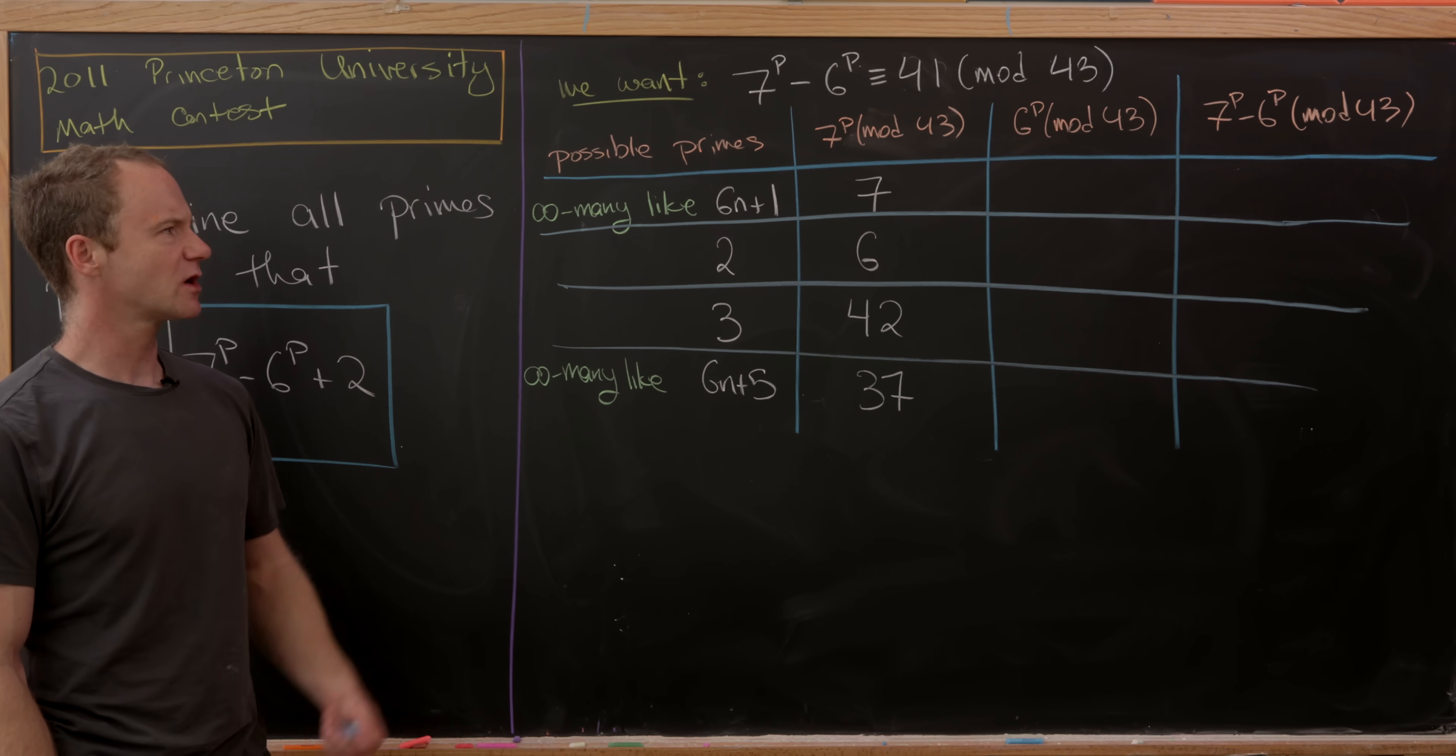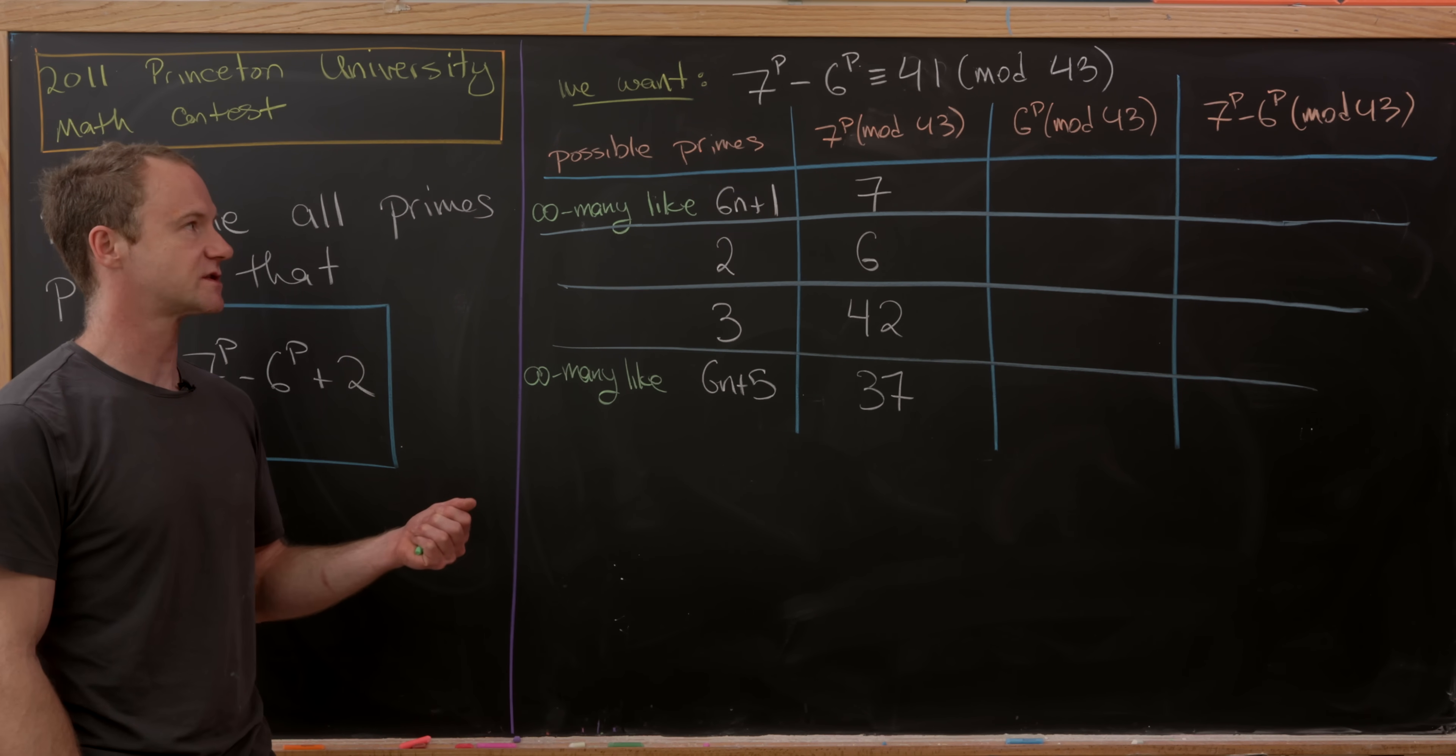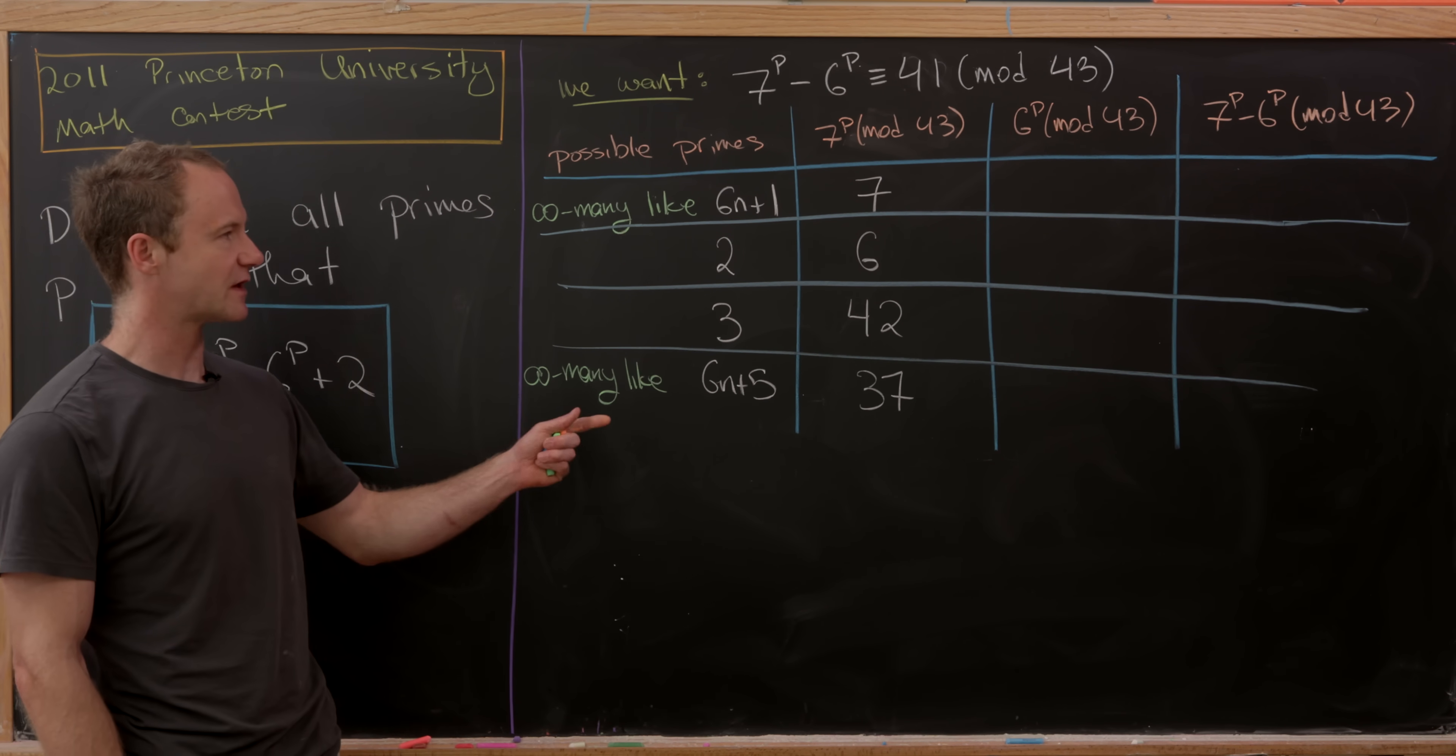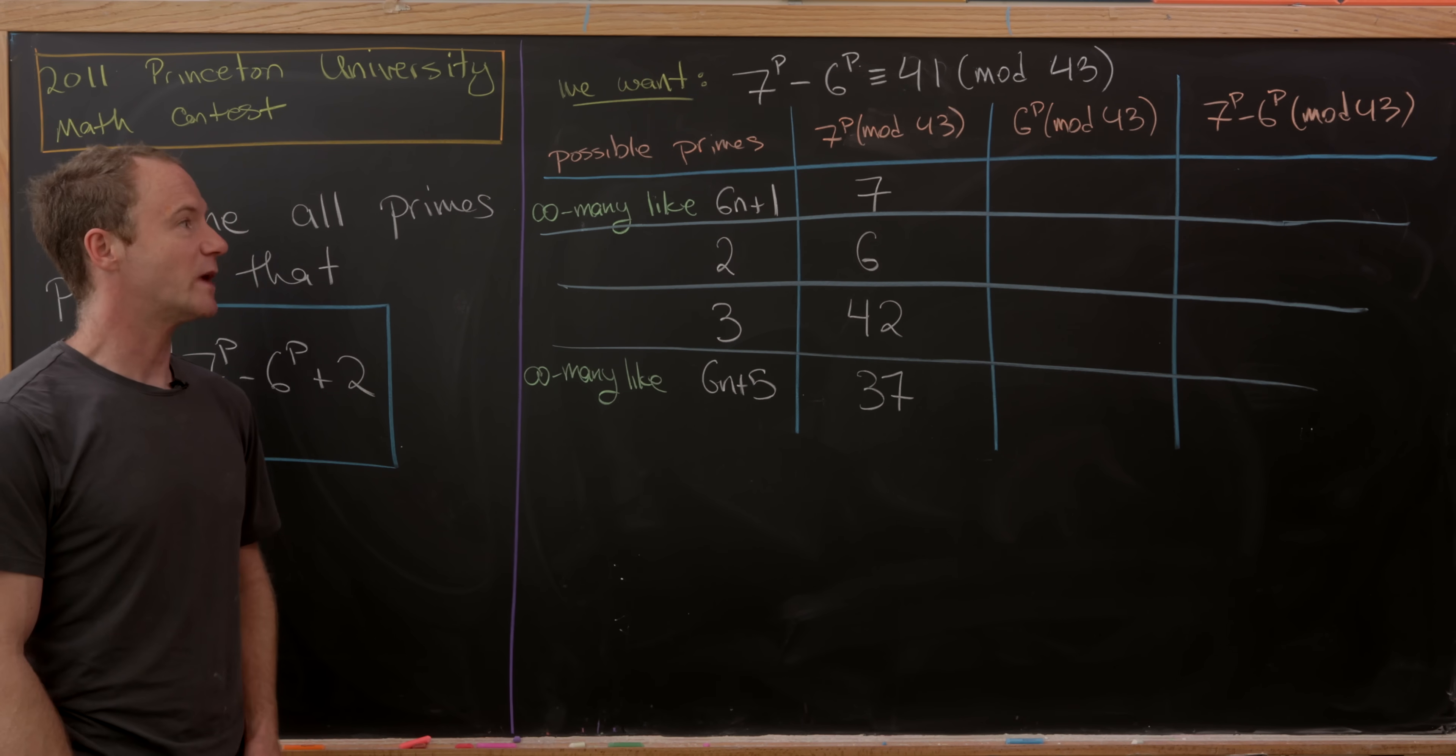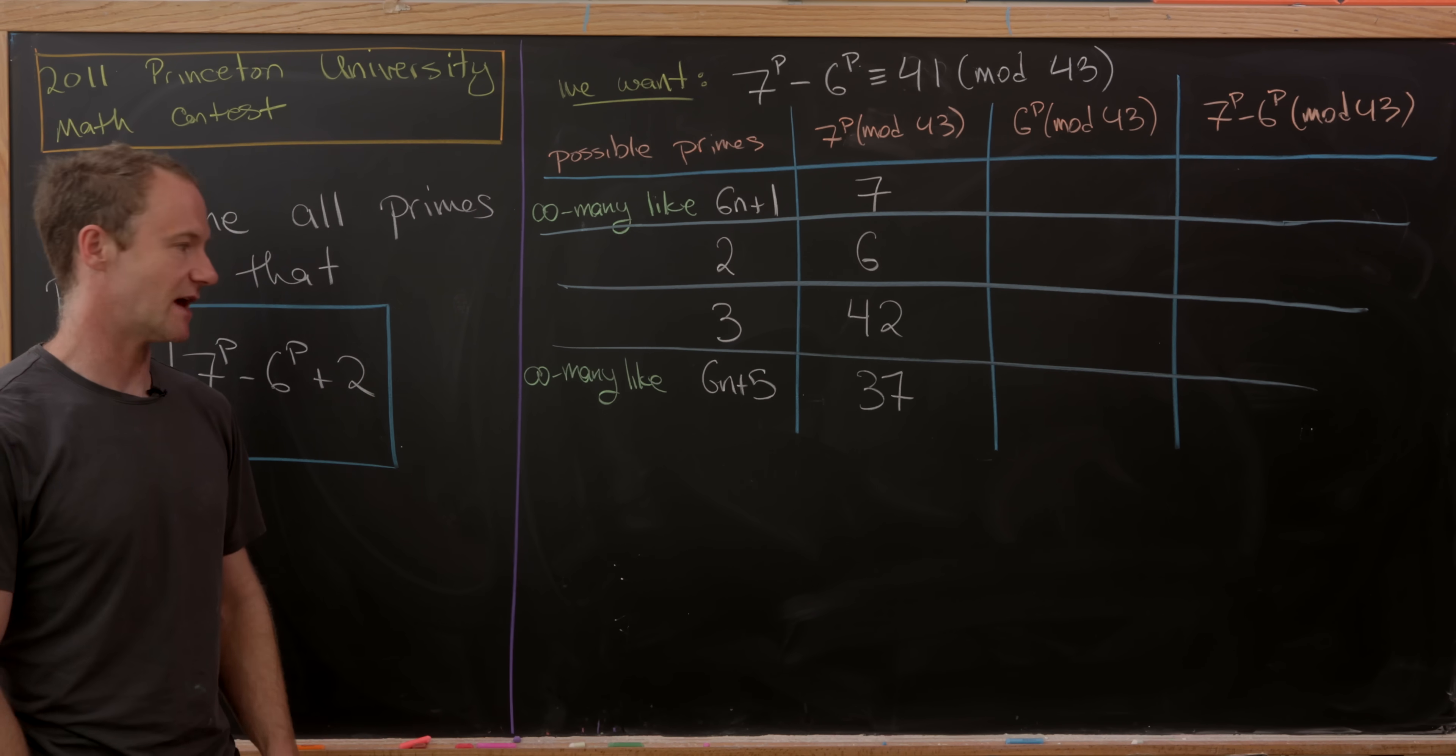Recall that the possible orders of a number mod 43 involve all divisors of 42. So it's possible that our chart isn't big enough. But looking ahead and keeping in mind that we're looking for a simple solution, we expect the order of 6 to work nicely with the order of 7.